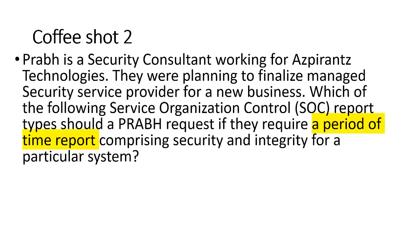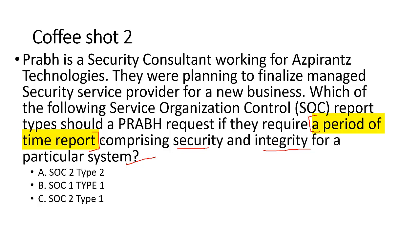Question 2: Prab is a security consultant working for Aspirants Technology, planning to finalize a managed security service provider. Which SOC report should be approved if they require a period-of-time report comprising security and integrity of a particular system? Three keywords: period of time, security, integrity — automatically pointing to SOC 2. Options: SOC 2 Type 2, SOC 1 Type 1, SOC 2 Type 1, or SOC 1 Type 2. We park SOC 1 Type 1 and SOC 1 Type 2 as those cover financial controls.